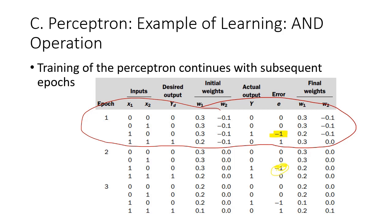The weights are also not uniform — for example, the weight for weight 1 has different values across iterations. The same applies for epoch 3, where there are still errors and the weights are not uniform.